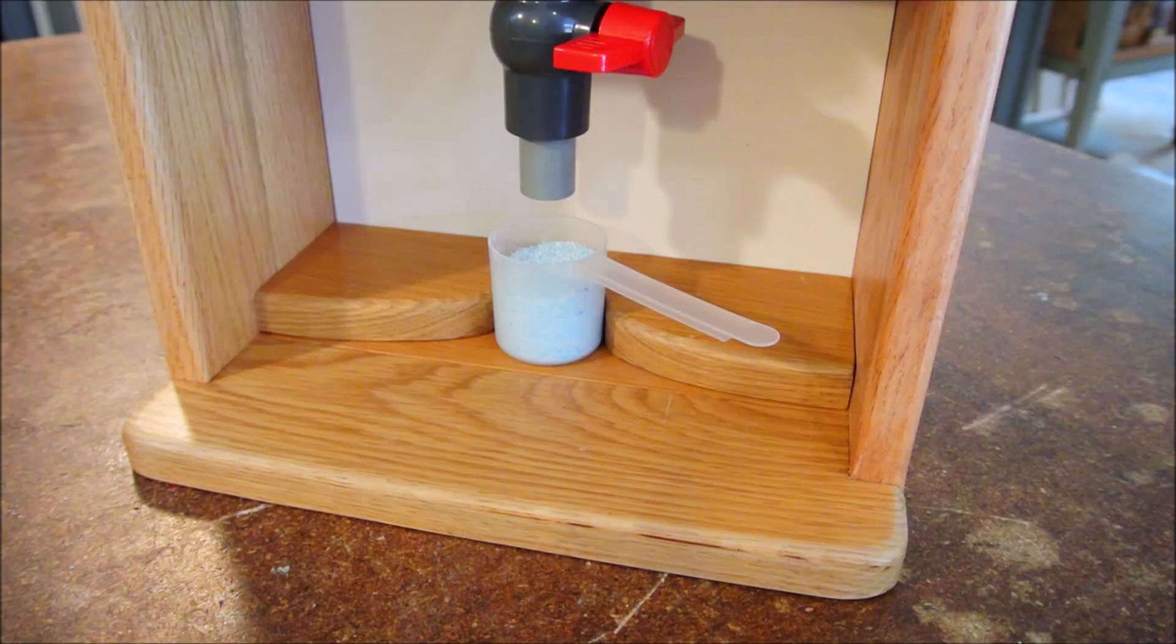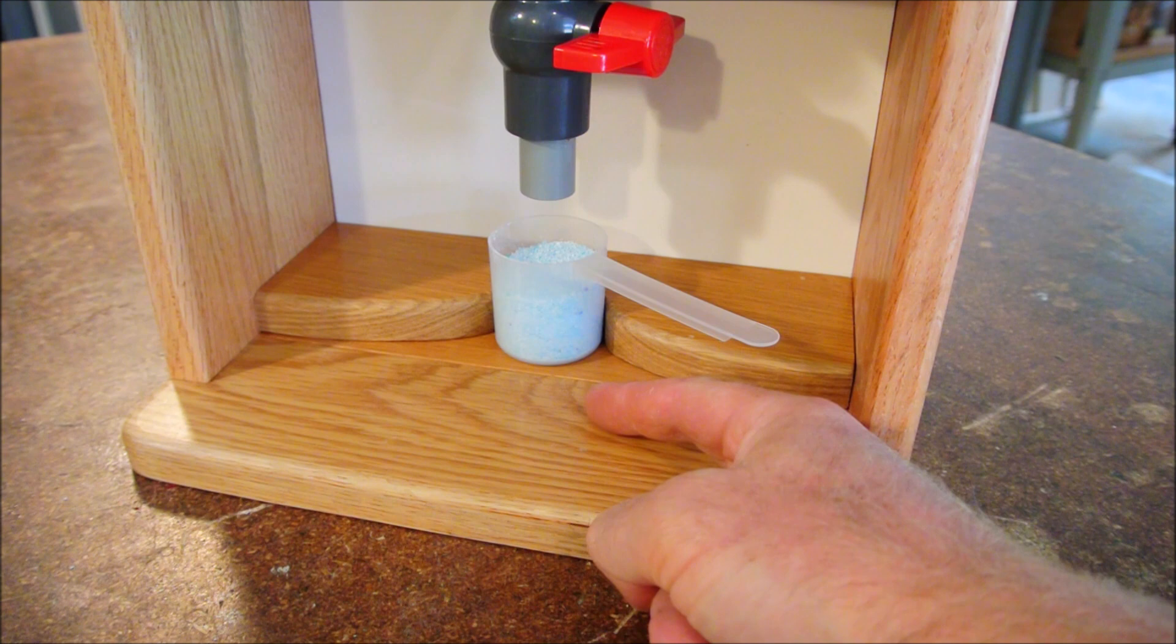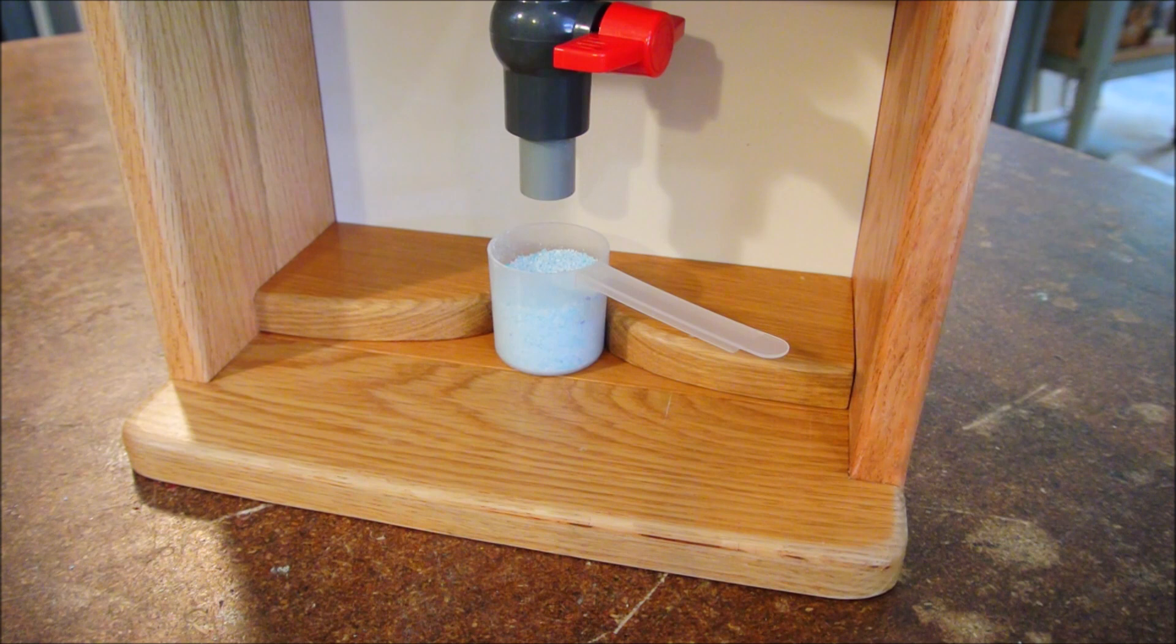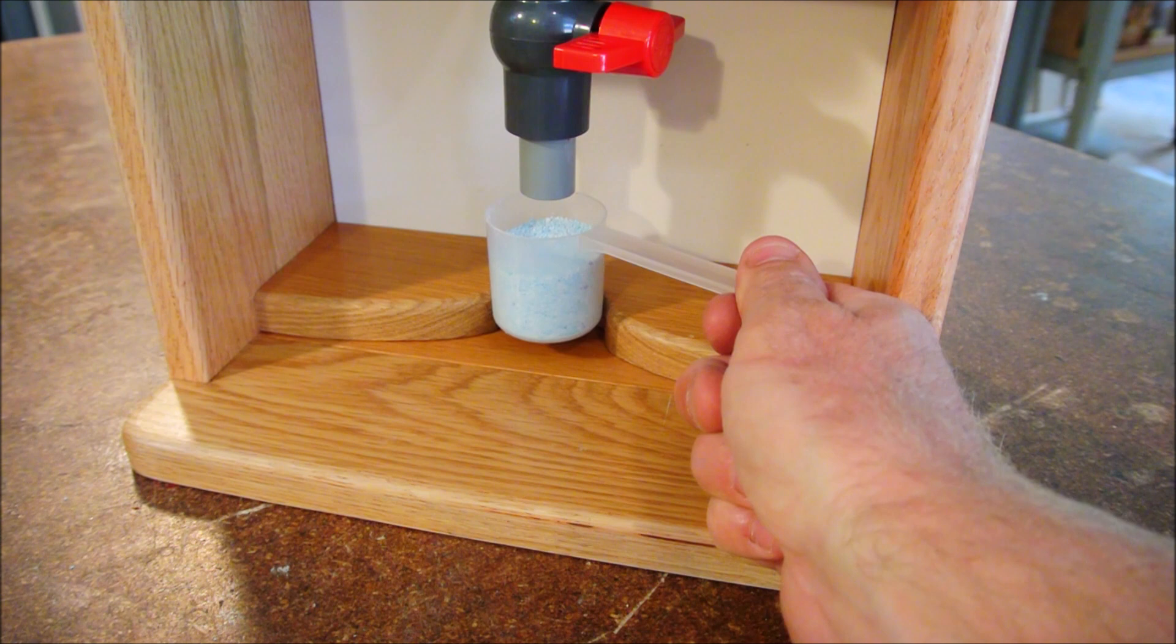Also consider that if your collection cup is down inside the wood, it will make it farther away from this nozzle, and so a few more grains are likely to spill. Ideally, we want it as close as possible to the exit of the nozzle, but not so close that it makes it difficult to get in and out.